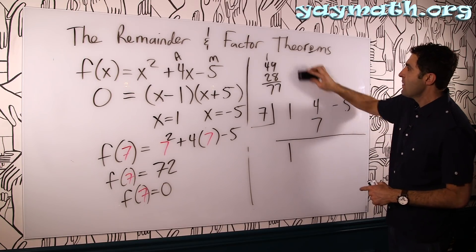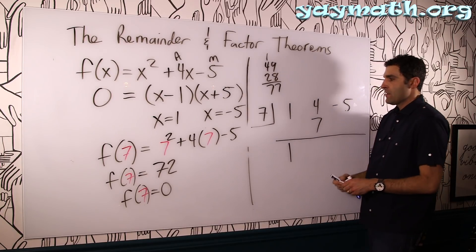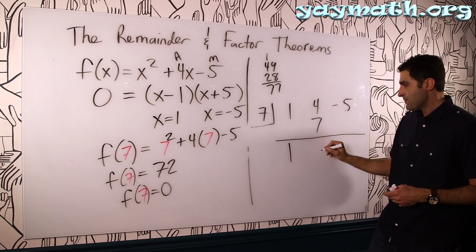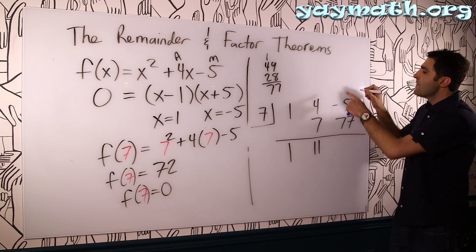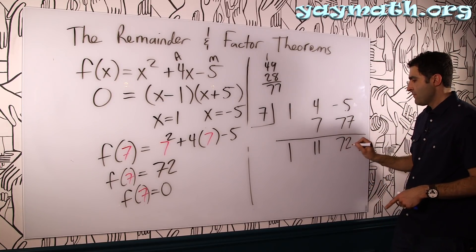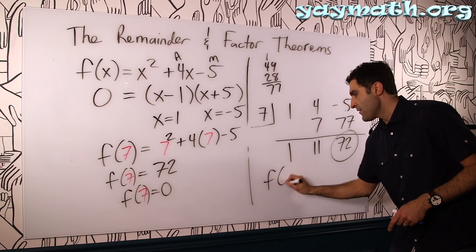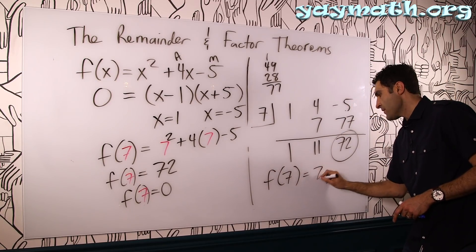Take this off. Off. Probably because I'm excited. Okay. Add down. This is 11. 77. 72. Awesome. So then we get f of 7 equals 72.